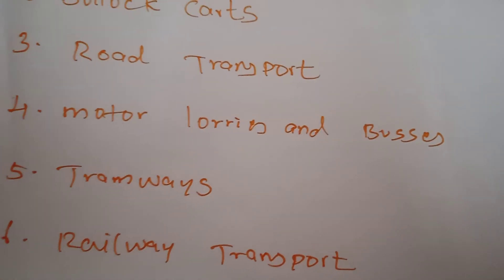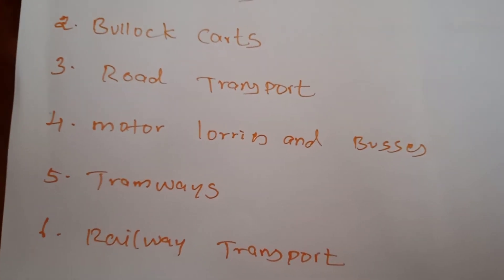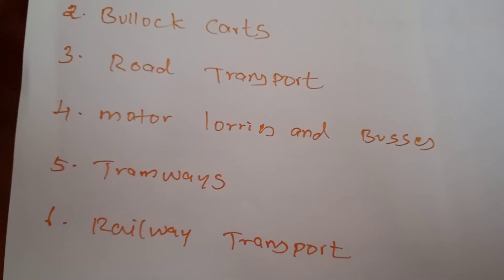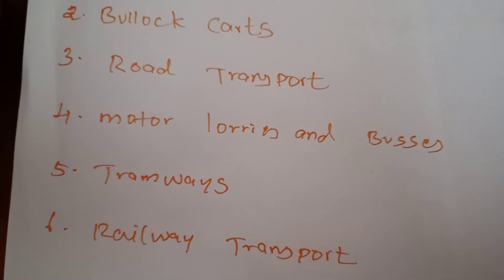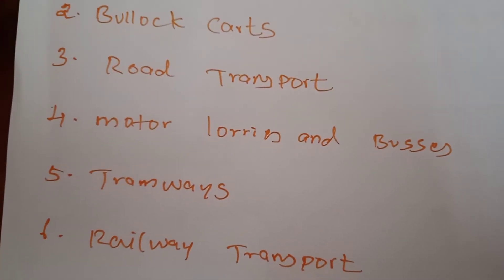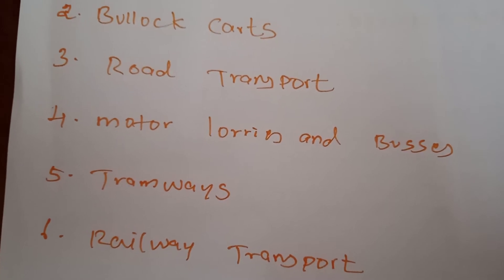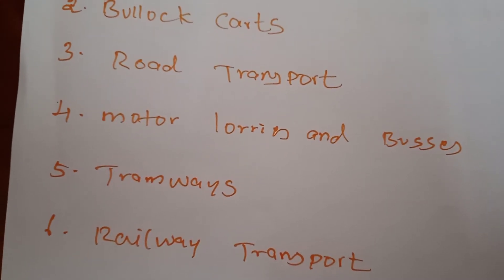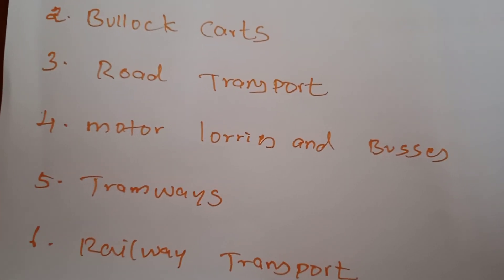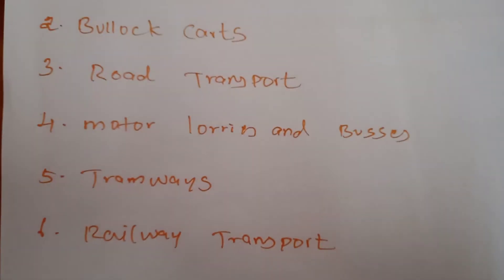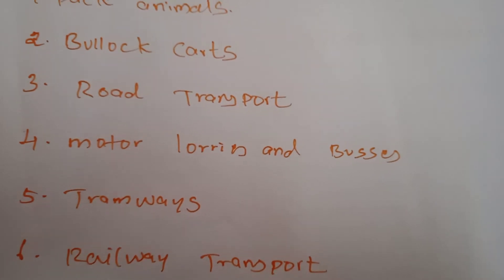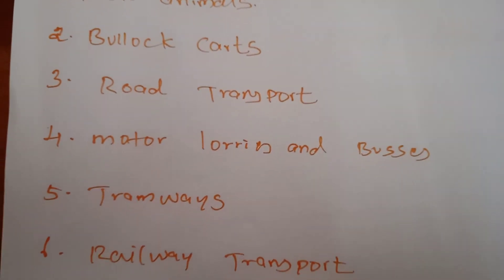Next is motor lorries and buses. From the dawn of civilization, people have endeavored to build roads and use wheeled vehicles to facilitate the transport of men and materials. The credit for revolutionizing road transport — introducing speed and greater carrying capacity — goes to motor lorries and buses. All large-scale industries and producers use motor lorries and buses to carry their products from one place to another.